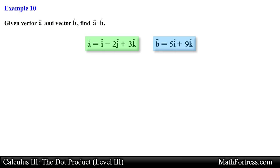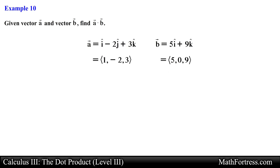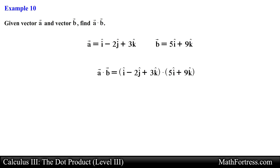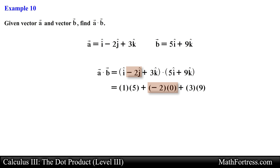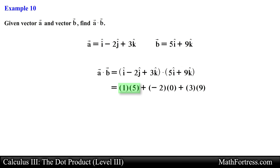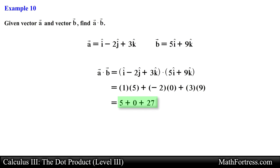Here we have two vectors written in unit vector form. Recall that the unit vectors i, j, and k represent the x, y, and z components respectively. We use the component definition of the dot product, multiplying the coefficients of i, j, and k in turn. The first product gives 5, the second 0, and the third 27, so adding these together gives a final answer of 32.